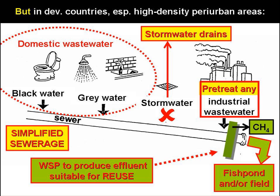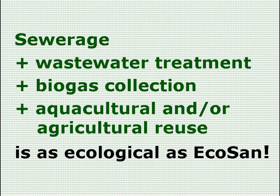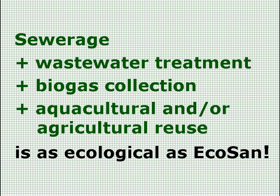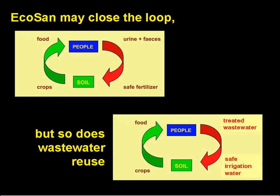Actually, it's not all bad at all. You can use simplified sewerage to reduce costs. You can prevent stormwater entering the sewer — this is very commonly done anyway in developing countries, where it's usual to see stormwater drains in urban areas. And you can insist that industrial wastewaters are treated prior to discharge, very effectively through a trade waste tariff structure that charges a lot for untreated wastes and much less for treated wastes, so that it becomes financially attractive to treat the waste before discharge. Then you can treat the wastewater in waste stabilisation ponds, and at large works you can recover methane from the anaerobic ponds. Finally you can reuse the pond effluent in aquaculture and/or agriculture. So really, sewerage plus wastewater treatment plus reuse is as ecological as Ecosan. Ecosan may close the loop, as we saw earlier, but so does wastewater reuse.